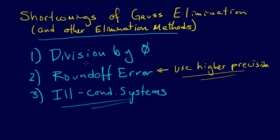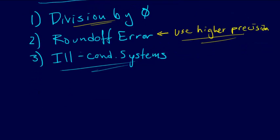In particular, I want to mention pivoting. So what can happen — let me give an example here — and this can also help with our division by zero issue. So let's say I've got a matrix.